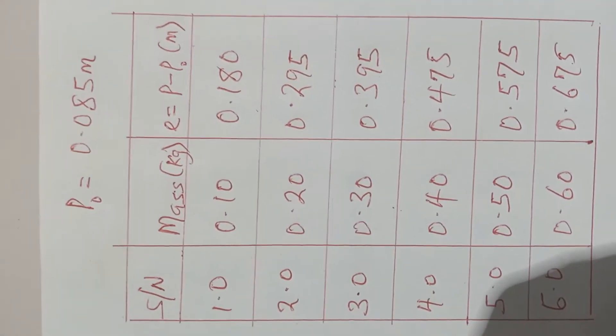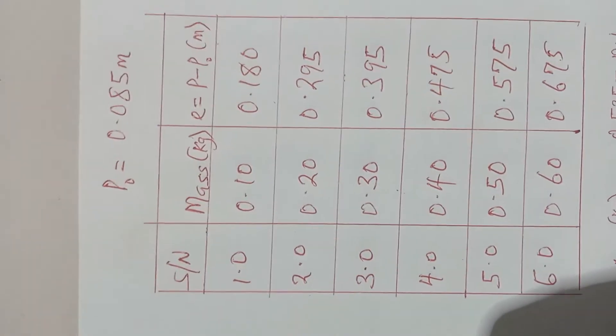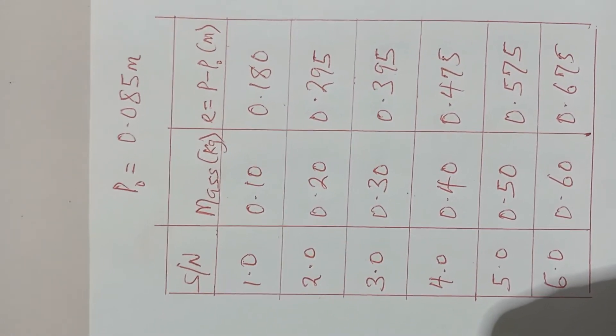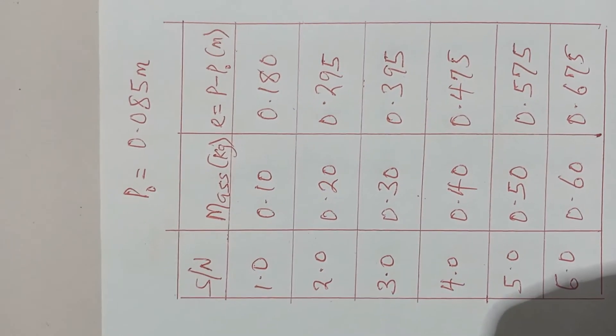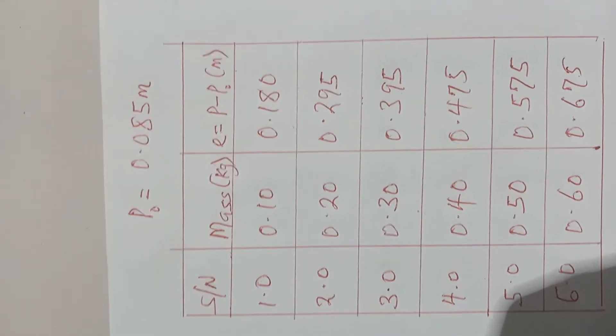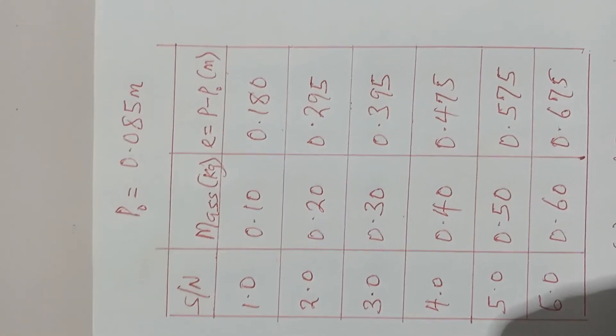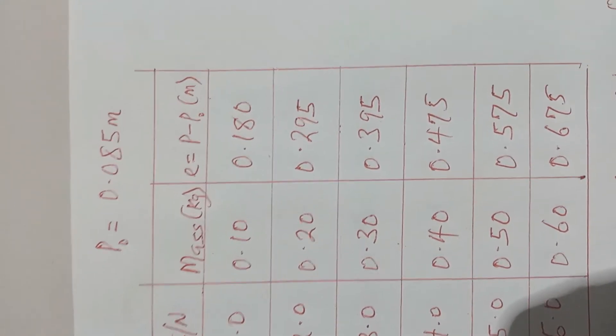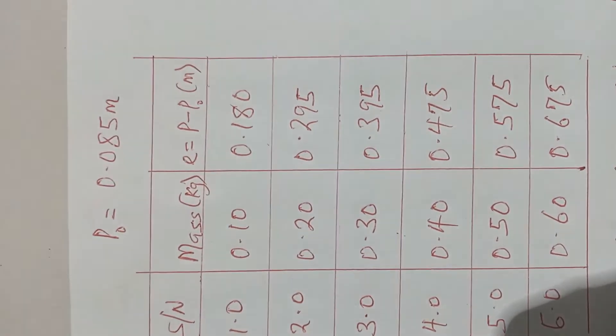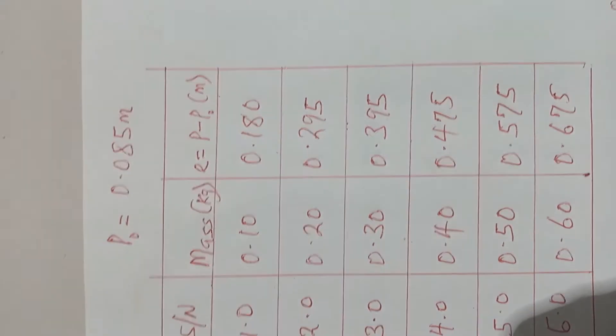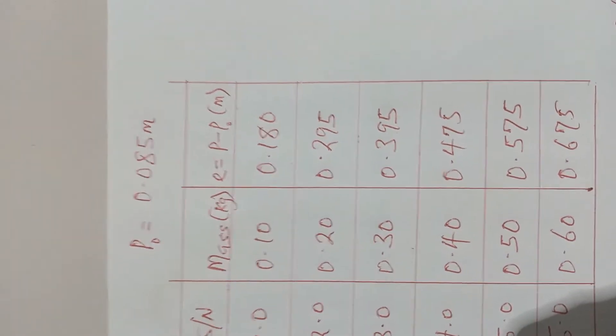Here is what the table looks like. Okay, so this is the final representation of the experiment. So I have my masses and I have my extension produced recorded with the initial pointer reading on top of the table as you can see. Now if I plot a graph of M on the vertical axis against E on the horizontal axis, it is going to give me a straight line graph.